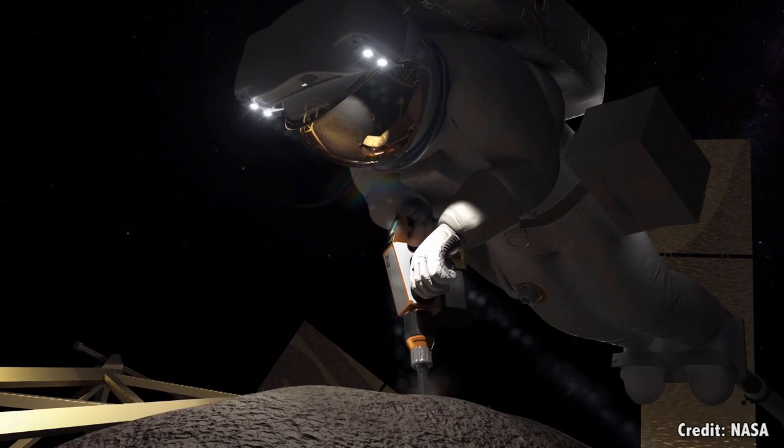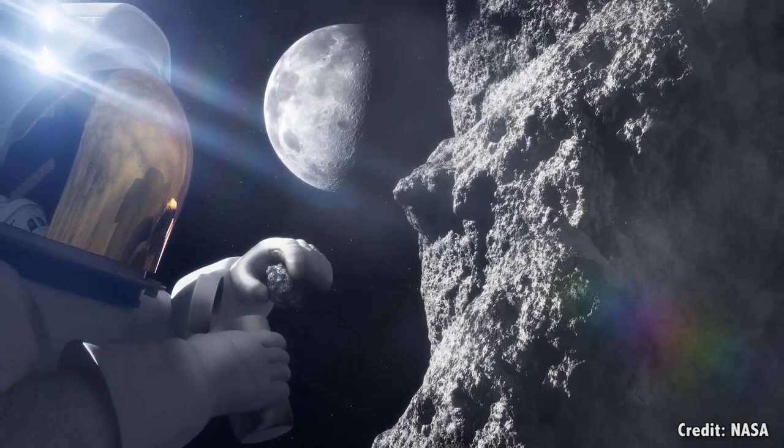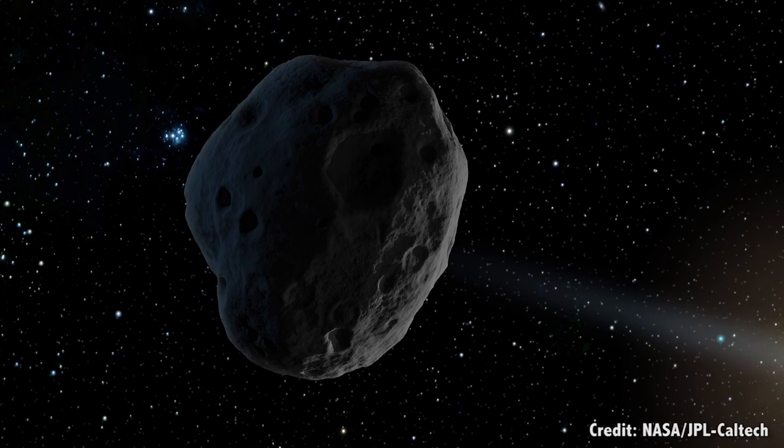For all that, the entire asteroid belt contains much less material than Earth's own Moon. The ease of mining and transport on these bodies made them a critical source of raw materials for building up the early solar infrastructure,